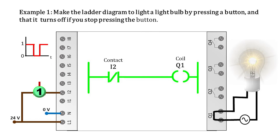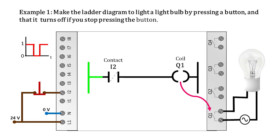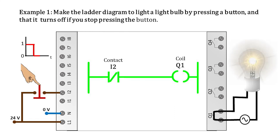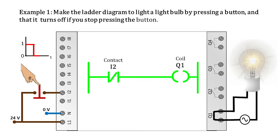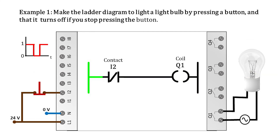If we stop pressing the button, it closes the circuit, sending a high level of voltage to the PLC input, which translates into a logical one that reaches contact I2, making it change state — that is, it is going to deactivate or open. Then the Q1 coil is also deactivated; this coil immediately sends a signal to open the Q1 output, causing the bulb circuit to open and turn off. This whole process is done instantly; we do not perceive the time it takes.